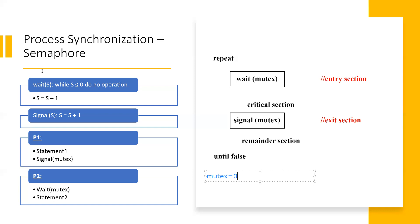If we talk about semaphore, we have to see the structure of the process — we have to occupy and complete our execution. We have to exit from the exit section and again we can call and request the particular critical section. If we talk about the semaphore variable, then we have seen the entry section.